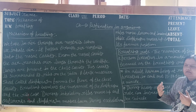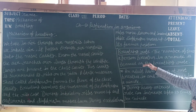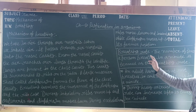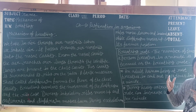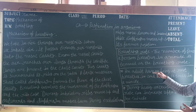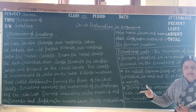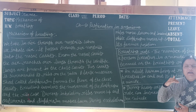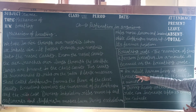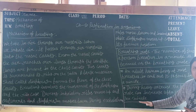Breathing rate is the number of times a person breathes in one minute. An adult human being at rest breathes in and out 15 to 18 times per minute. During breathing, we perform two actions: inhalation and exhalation — taking oxygen in and releasing carbon dioxide. During heavy exercise, the breathing rate can increase up to 25 times per minute.